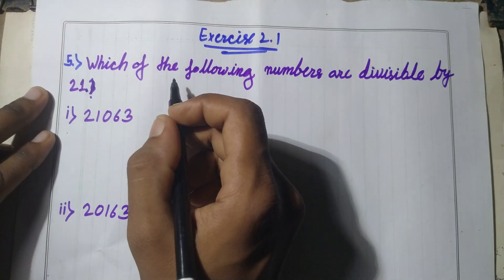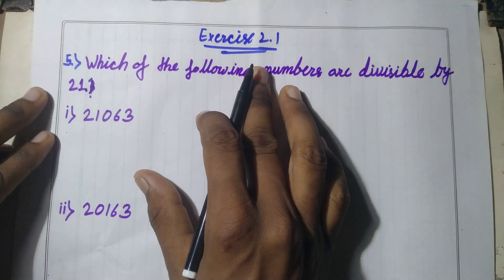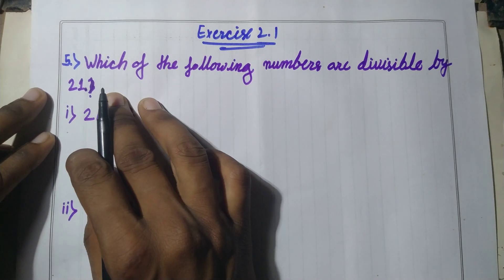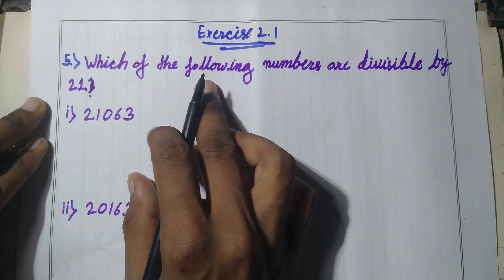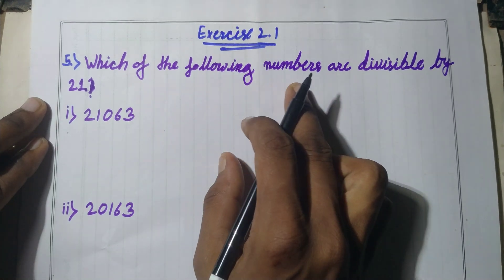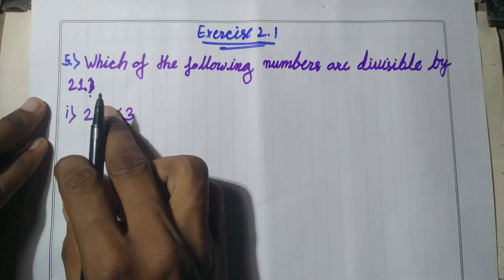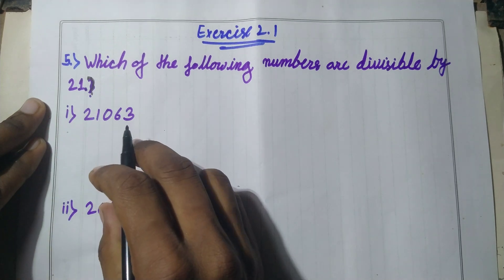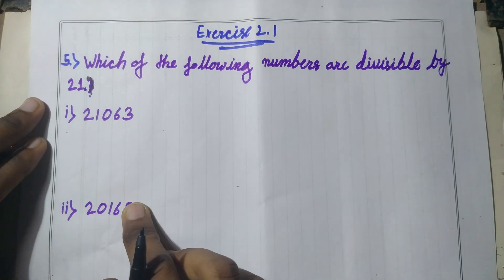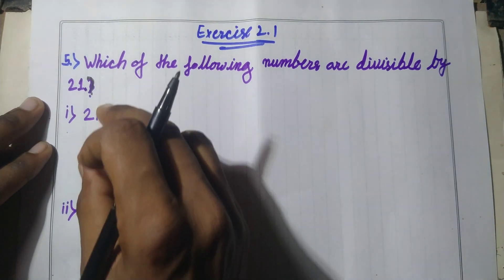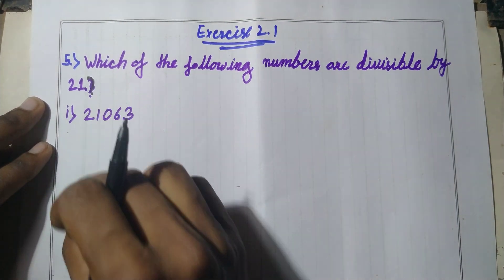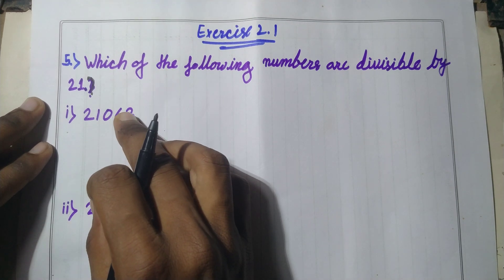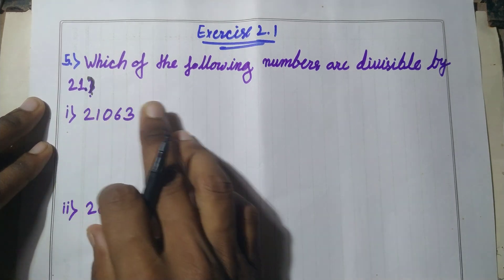Welcome back to this episode. Today's class discusses exercise 2.1, question number 5: which of the following numbers are divisible by 21? Two options are given. Both numbers may be exactly divisible by 21.